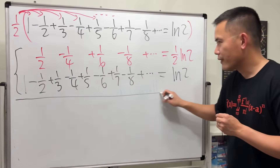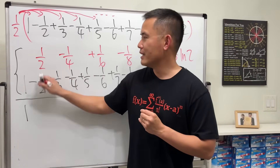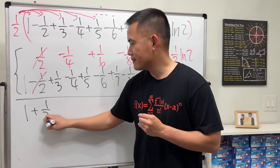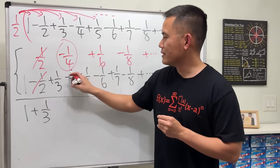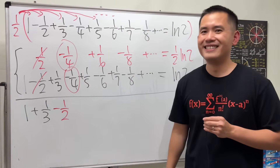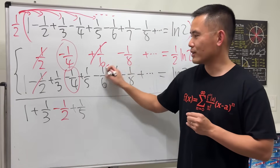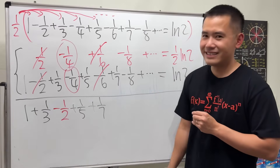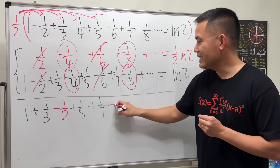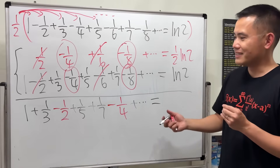Adding term by term: 0 plus 1 is just 1; 1/2 minus 1/2 cancels to zero; plus 1/3 gives 1/3; negative 1/4 minus 1/4 is negative 2/4, which is negative 1/2. The next term is 1/5, and those two cancel. Then 1/7 appears, and the next pair gives negative 2/8, which is negative 1/4. The pattern keeps going.